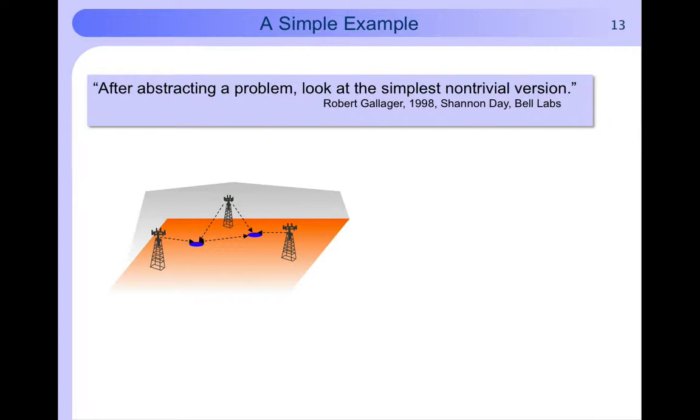For this scenario, every agent can only communicate with two anchors. It is clear that without cooperation both agents have an ambiguity.